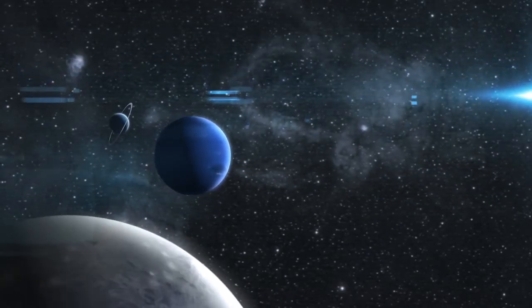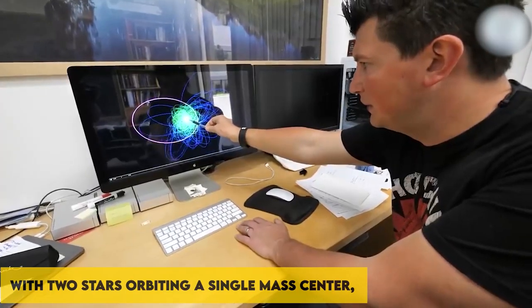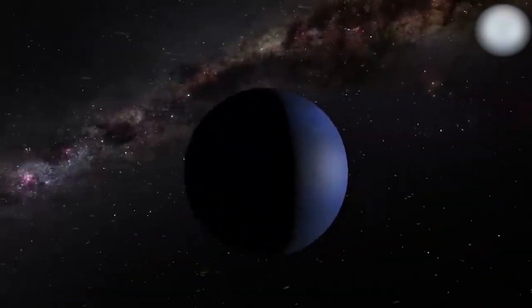Theoretically, two or more stars orbiting in tandem make up more than four out of every five star systems. With two stars orbiting a single mass center, the bulk of these systems are probably binary.